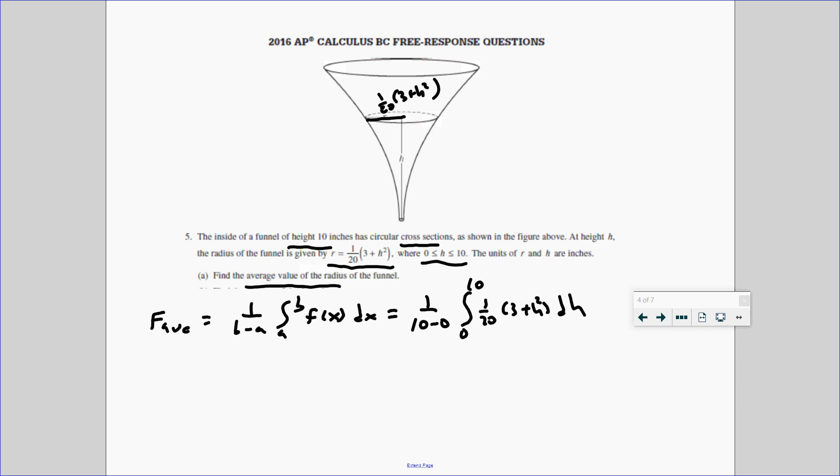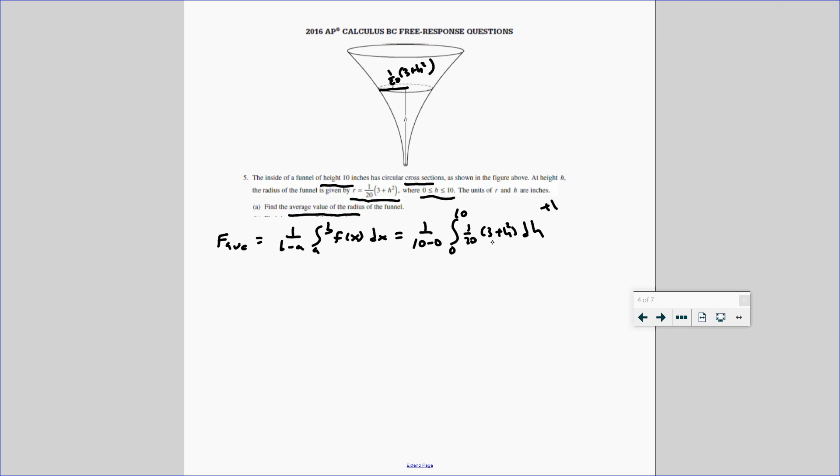Now, you're going to get 1 point just for writing that integral. Now, we're going to simplify it. We do have to solve this one, but this one's not a bad one to solve. So the first thing we're going to do is factor out the 1 over 20. And if we do that, we're going to get this 1 over 200 from 0 to 10, 3 plus h squared dh. And integrating that, 1 over 200, that becomes 3h plus h³/3 from 0 to 10.